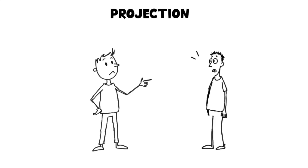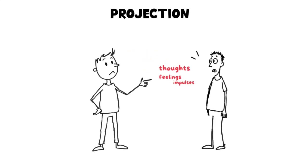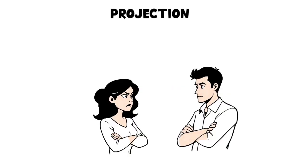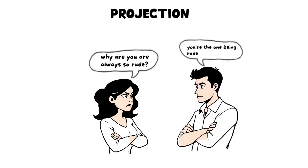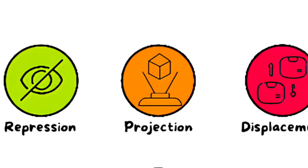Projection. Projection occurs when someone attributes their own unacceptable thoughts, feelings, or impulses to someone else. Instead of recognizing one's own flaws, they see them in others.